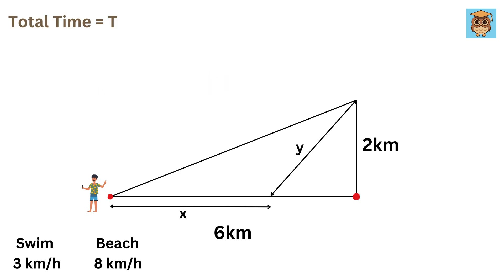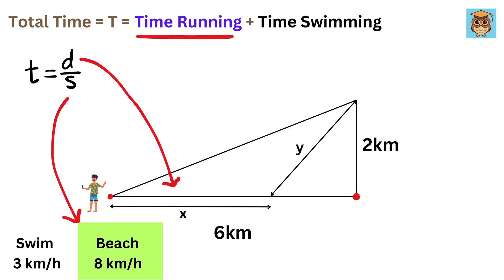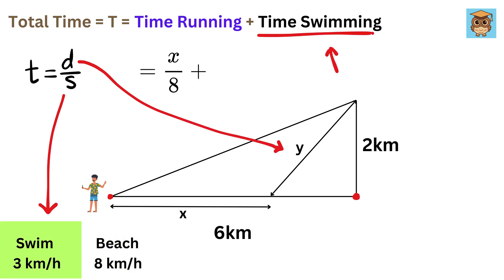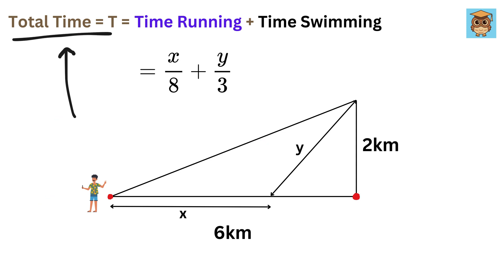To figure out how long it takes to get from the cabin to the island, add the time spent running to the time spent swimming. We all know that distance equals speed multiplied by time. Therefore, time equals distance over speed. The time Alex spent running along the beach is given by X over 8, and the time Alex spent swimming is Y over 3. So T, or the total time Alex spent traveling, is this plus this.